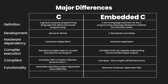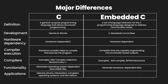Last up the list we have applications of both languages. Network drivers, interpreters, compilers, operating systems, and text editors are some examples of C applications. However, embedded C helps to develop embedded systems such as robots, vehicle tracking systems, smart monitoring systems, and so on.